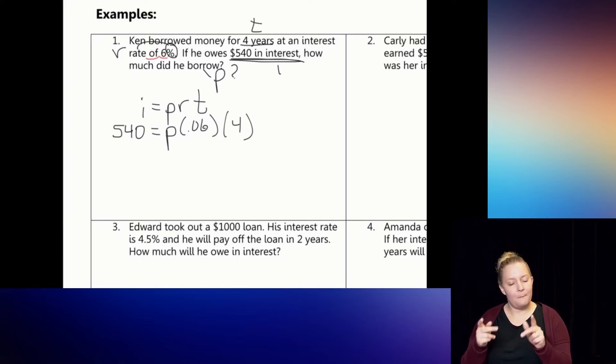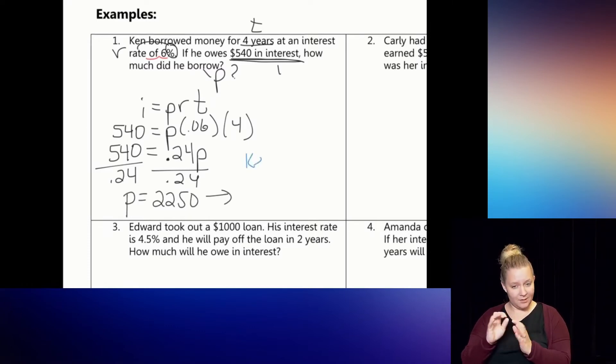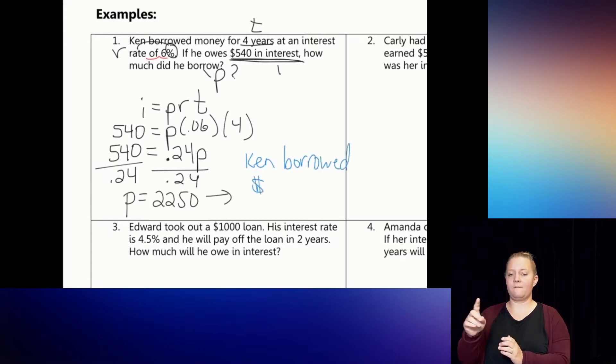Okay, well I can't multiply the P by the .06 and the 4, but I can multiply those two numbers to get .24. And I know if I'm multiplying an extra variable with it, I just put it at the end. So 540 is equal to .24 times P. Well, to get P by itself, I want to do the opposite, so I want to divide both sides by .24. Yes, you're allowed to type that in your calculator. And when you do that, you'll get 2,250, which means Ken borrowed $2,250. That was his original amount that he started with, his principal.